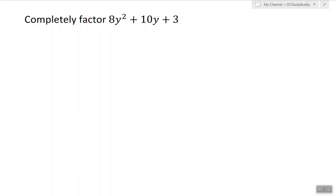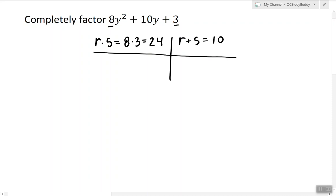So the strategy is to find two numbers whose product is equal to the product of the first and the last coefficient which is 24 and at the same time the sum is equal to 10. So we're going to start by listing all the possible numbers whose product is 24.